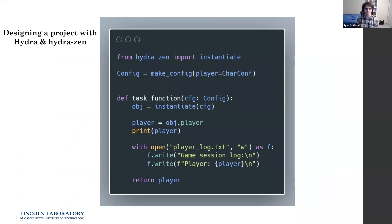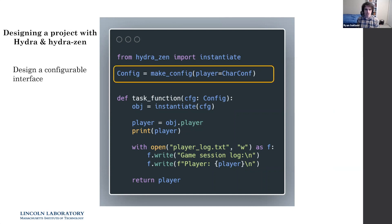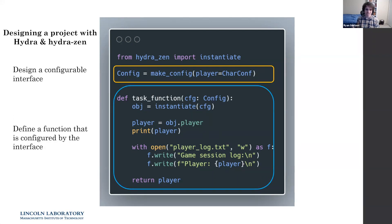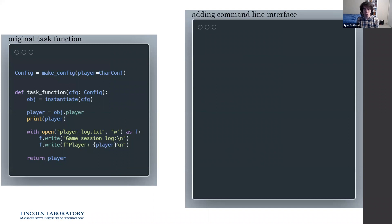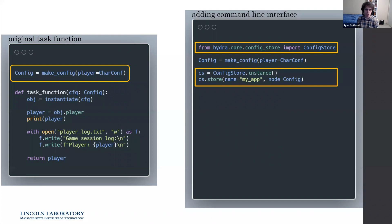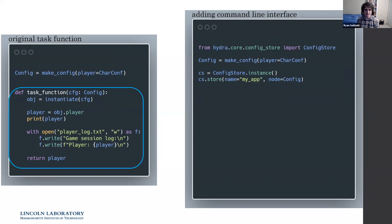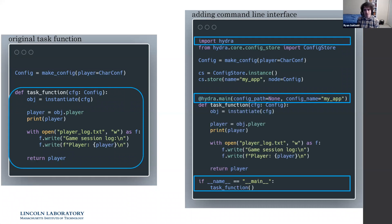To summarize, Hydra and Hydra Zen standardize project design by requiring two things: design a configurable interface to your program, and define a task function that gets configured by that interface and runs your code. Adding a command line interface is also straightforward — register your config with Hydra's config store, decorate the task function with the Hydra decorator specifying the top-level config name, and add the standard if-main block. That's all it takes — basically no boilerplate code.